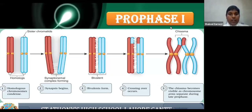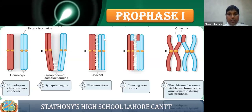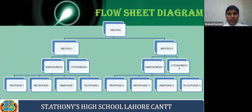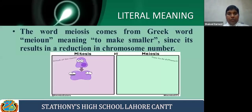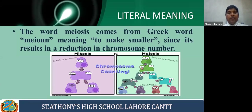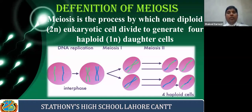Before starting our next phase, I want to summarize the last lecture. In the last lecture we studied meiosis. The word meiosis comes from the Greek word meaning to make smaller, since it results in a reduction in chromosome number. Meiosis is a process by which one diploid eukaryotic cell divides to generate four haploid daughter cells.